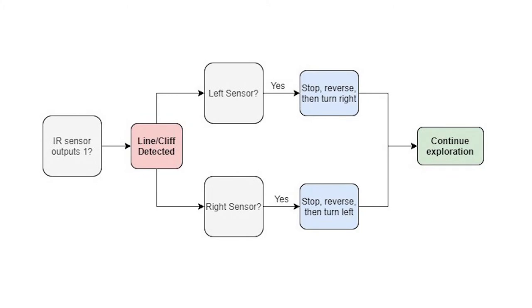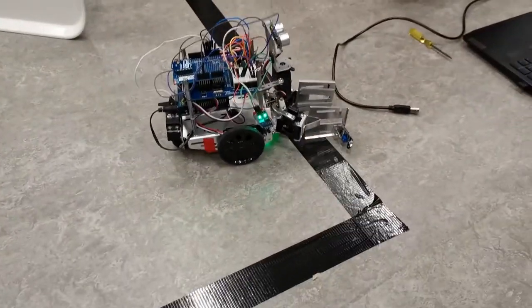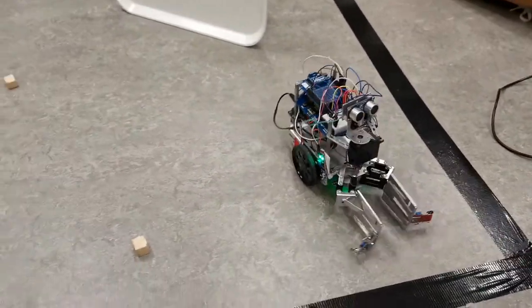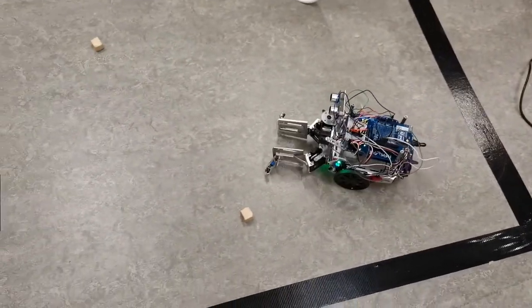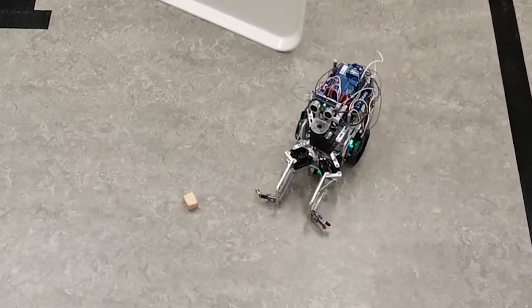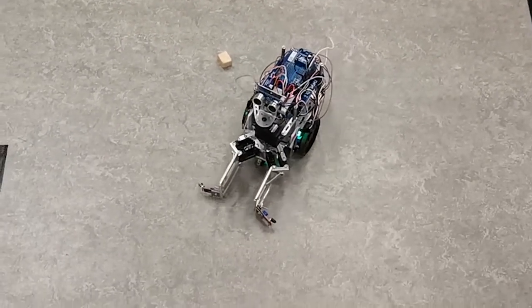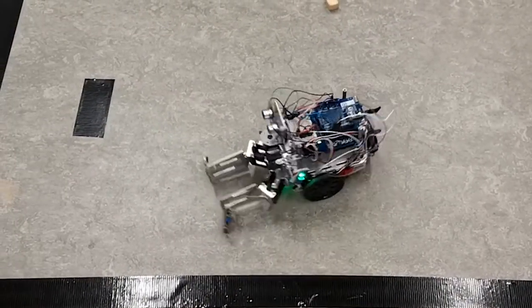The following flowchart shows the algorithm used to avoid cliffs and boundary lines. Whenever the sensor outputs a 1, it has detected either a cliff or a boundary line. Whenever a detection is made, the bot stops movement immediately, reverses a bit, and then turns the opposite direction to the sensor that detected something. So if the left sensor detected, then the bot stops, reverses, and turns right.